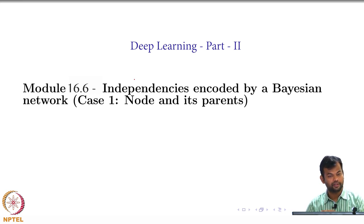So what happens in turn? You end up with a lesser number of parameters, right? And of course, the computational efficiency associated with that. So that is why we are interested in knowing what are the kind of independencies encoded by a Bayesian network.